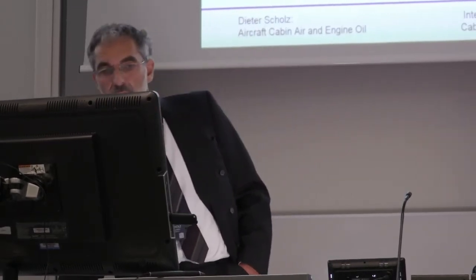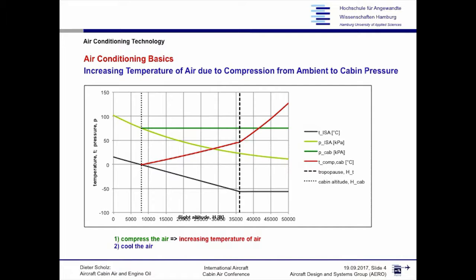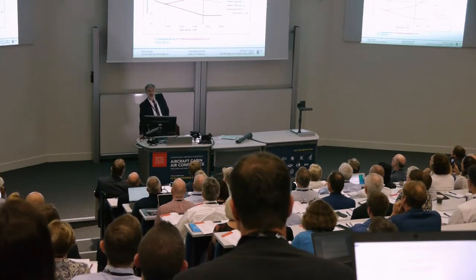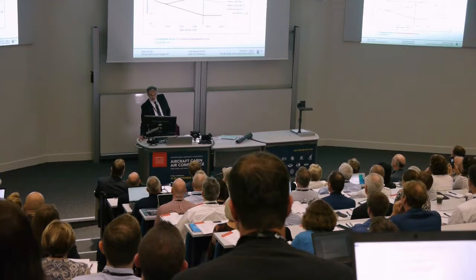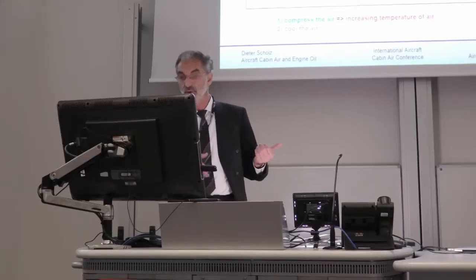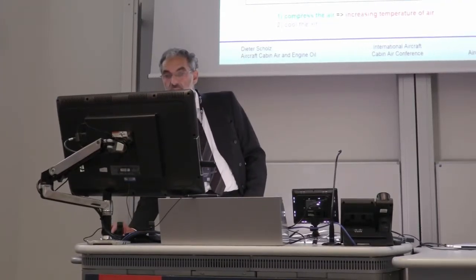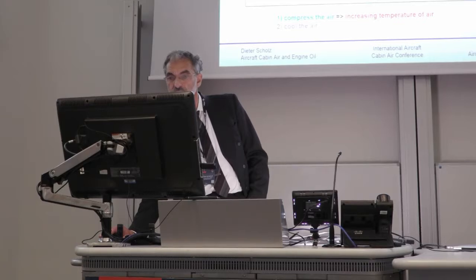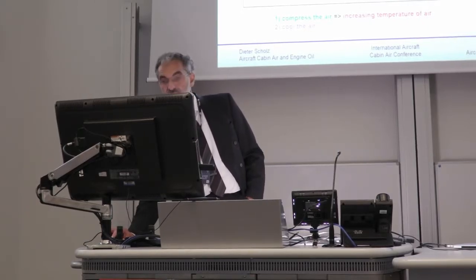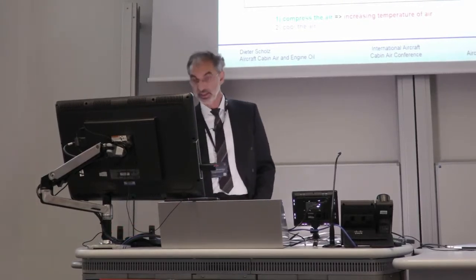Then the air flows out at the end and we have an outflow valve that regulates the pressure. Here we see flight altitude versus temperature and pressure: as we go up, we have a pressure drop in the atmosphere and the temperature goes down. At 8,000 feet, according to requirements, we maintain the pressure there; due to pressurizing the air — as you know from your bicycle pump — the temperature goes up.